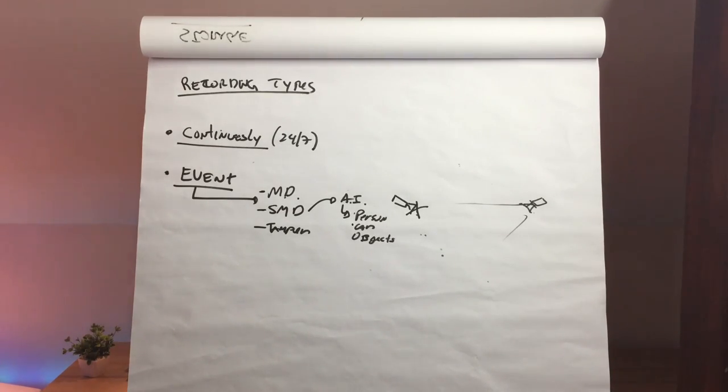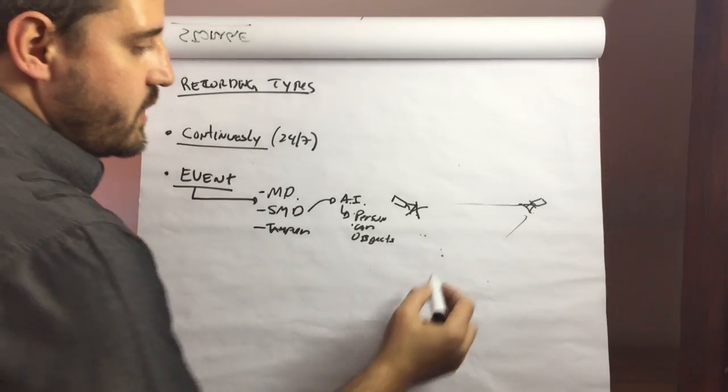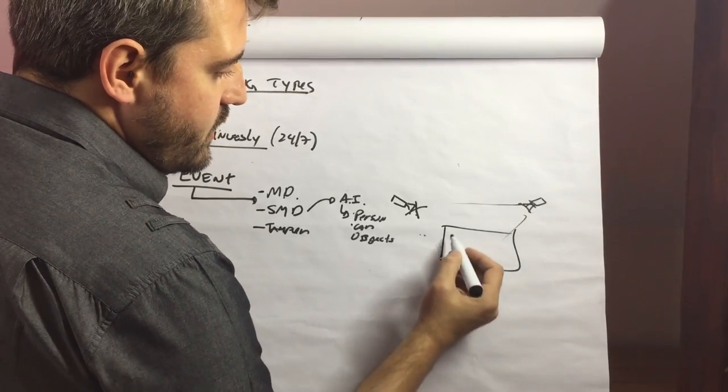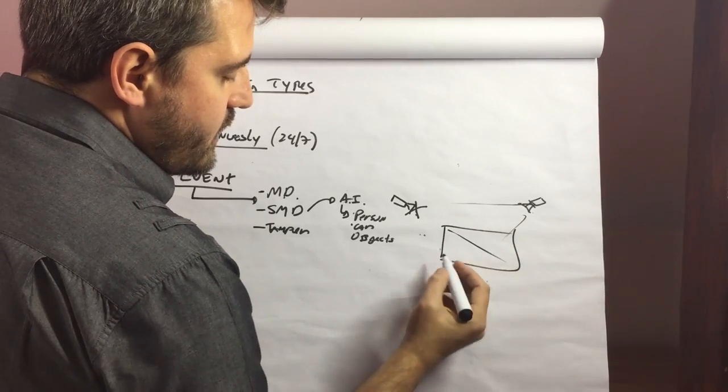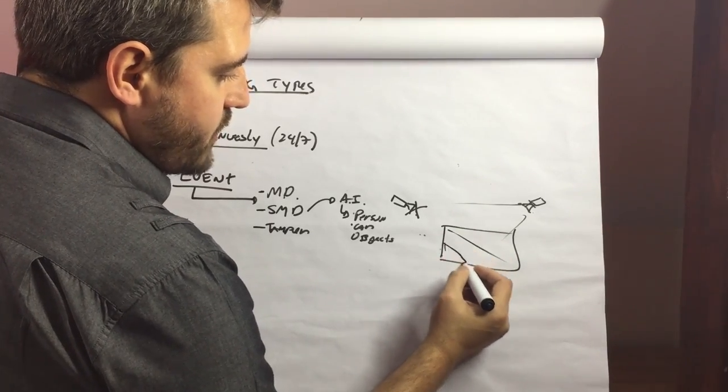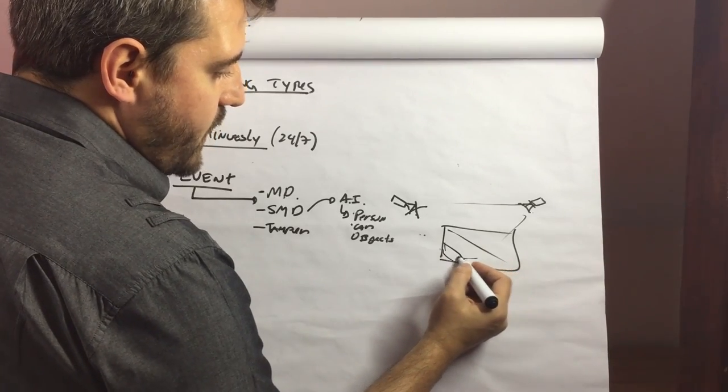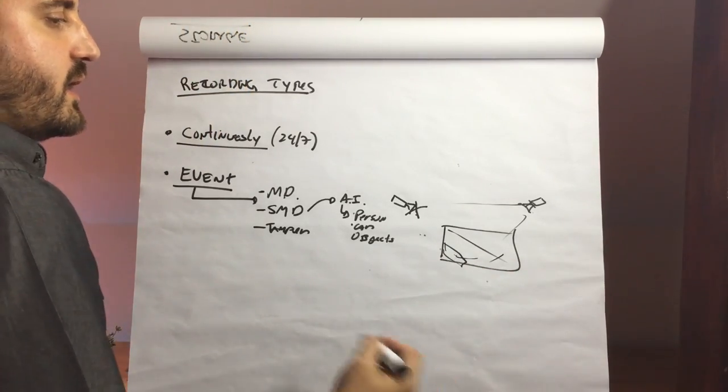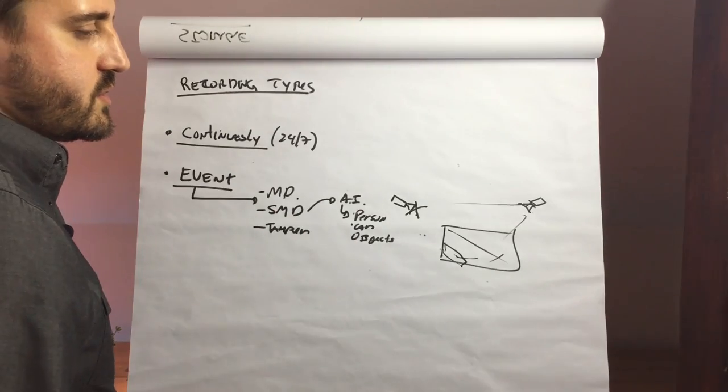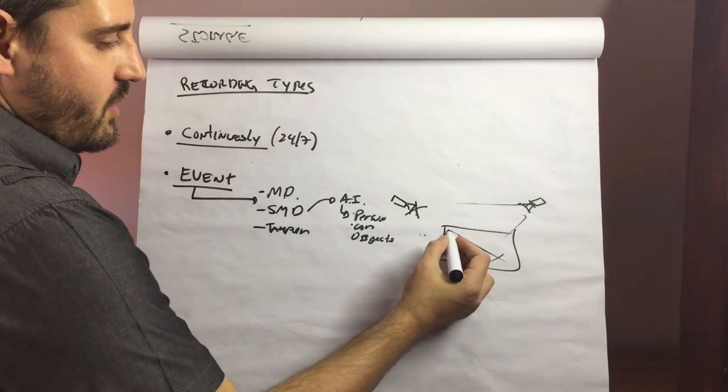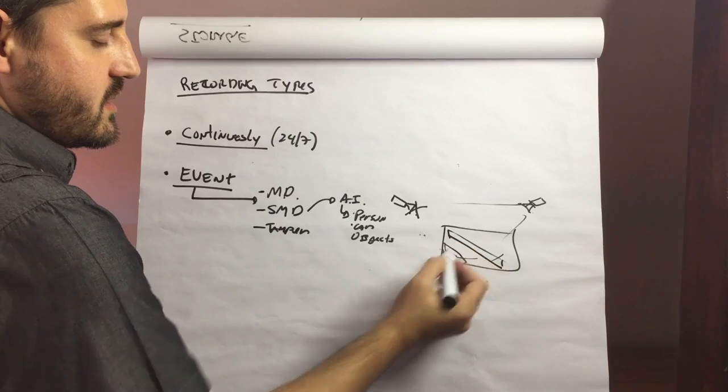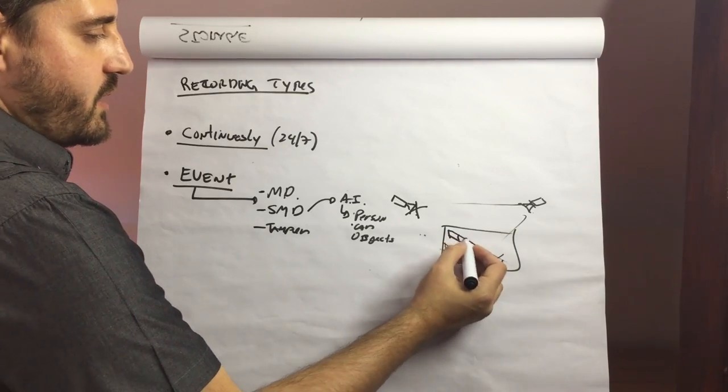We have other ones like intrusion detection. You can have the scene here and you can draw a line or a shape. So if someone pass through this shape or pass through this line, it will trigger as an intrusion detection. It can be called a fence alarm as well, depending on the manufacturer.